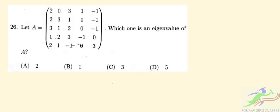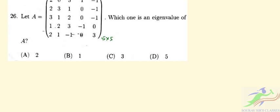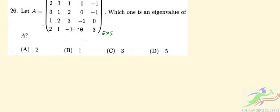Question number 26 is saying that let A be a 5×5 matrix. Which one is an eigenvalue of A? So if we write this in this form, A of is a column vector.